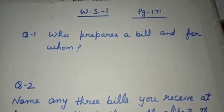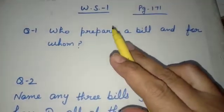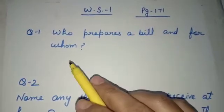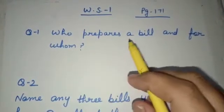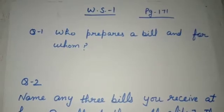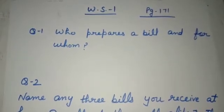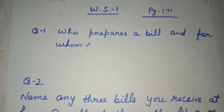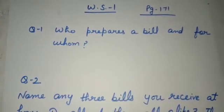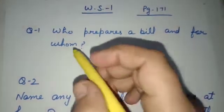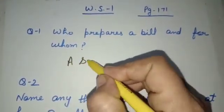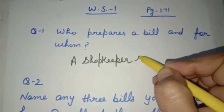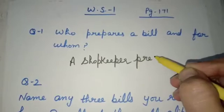Based on the above information, we are going to start worksheet one of the chapter, which is at page number 171 of our book. The first question is: who prepares a bill and for whom? A shopkeeper prepares a bill — as we learned, the slip of paper on which a shopkeeper notes down the requirement of a customer — so a shopkeeper prepares a bill for a customer.